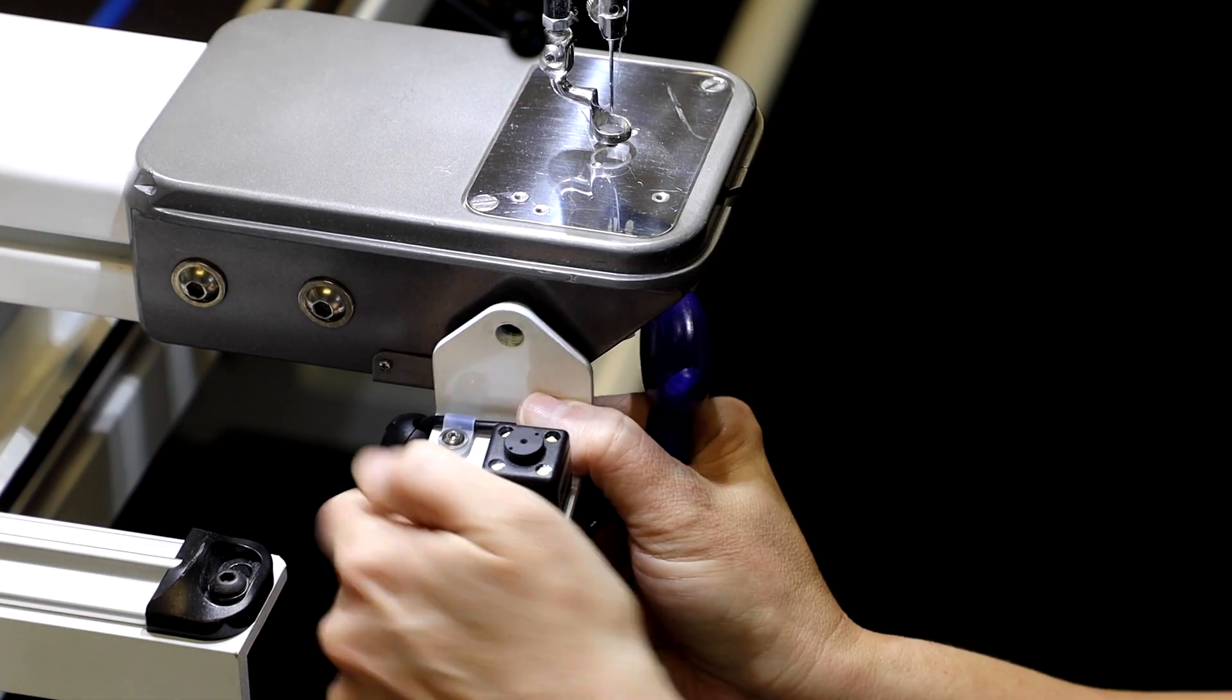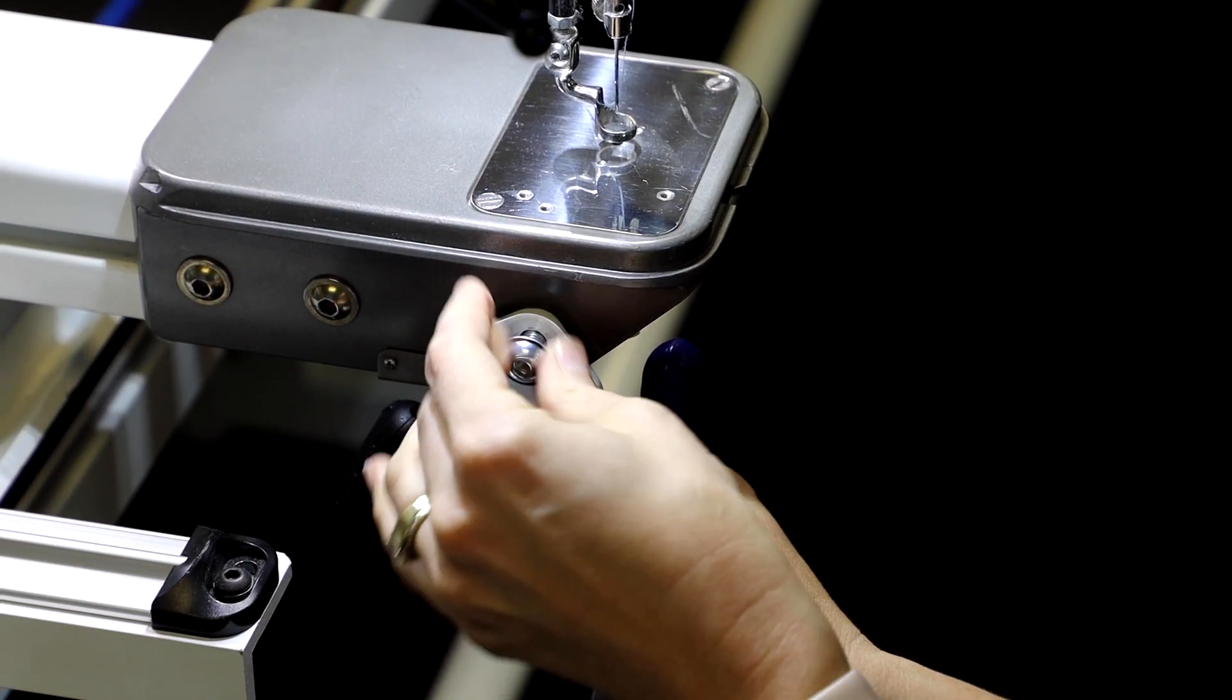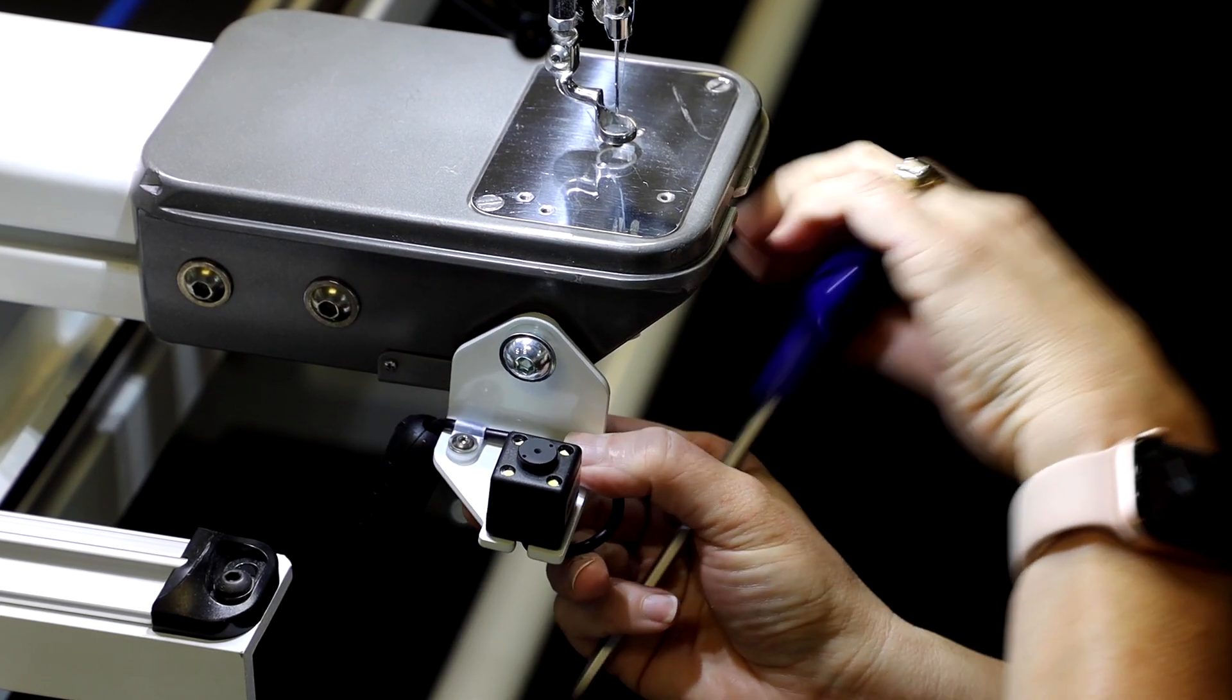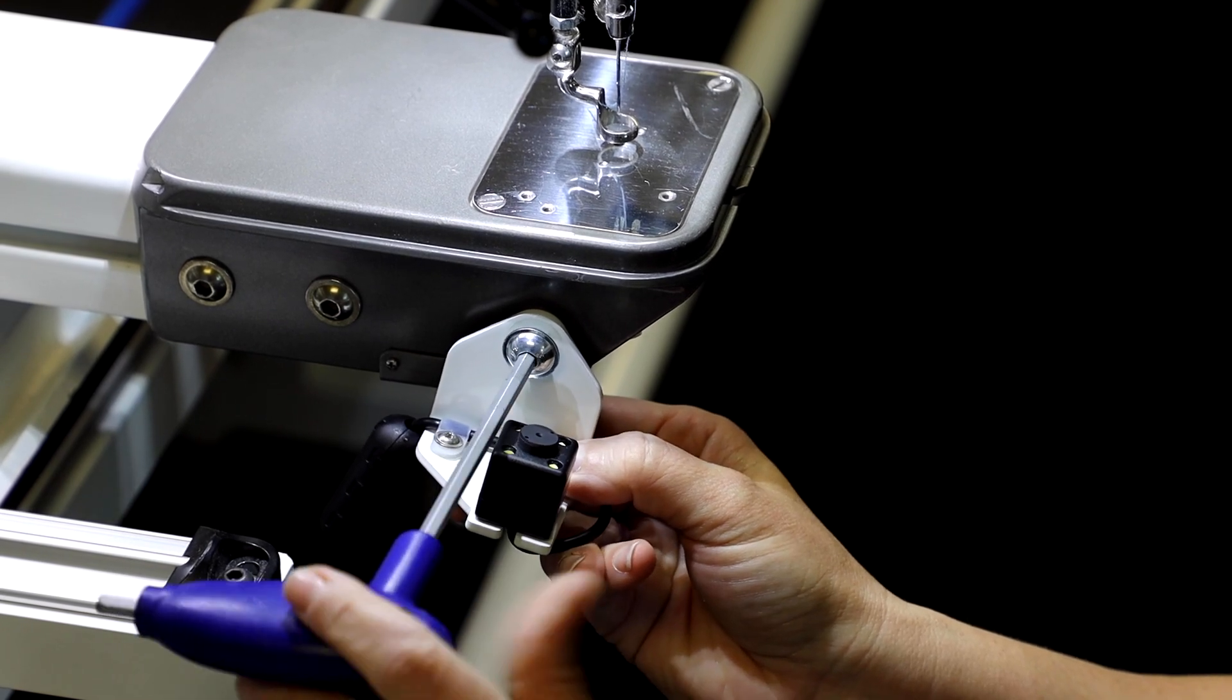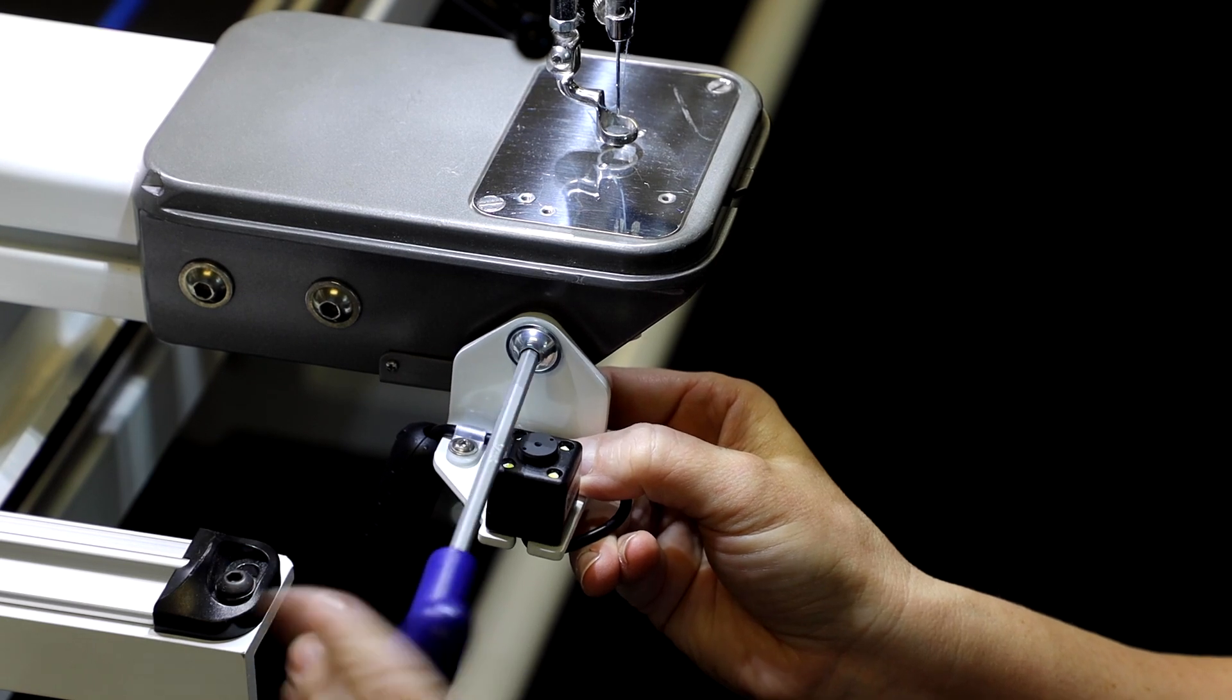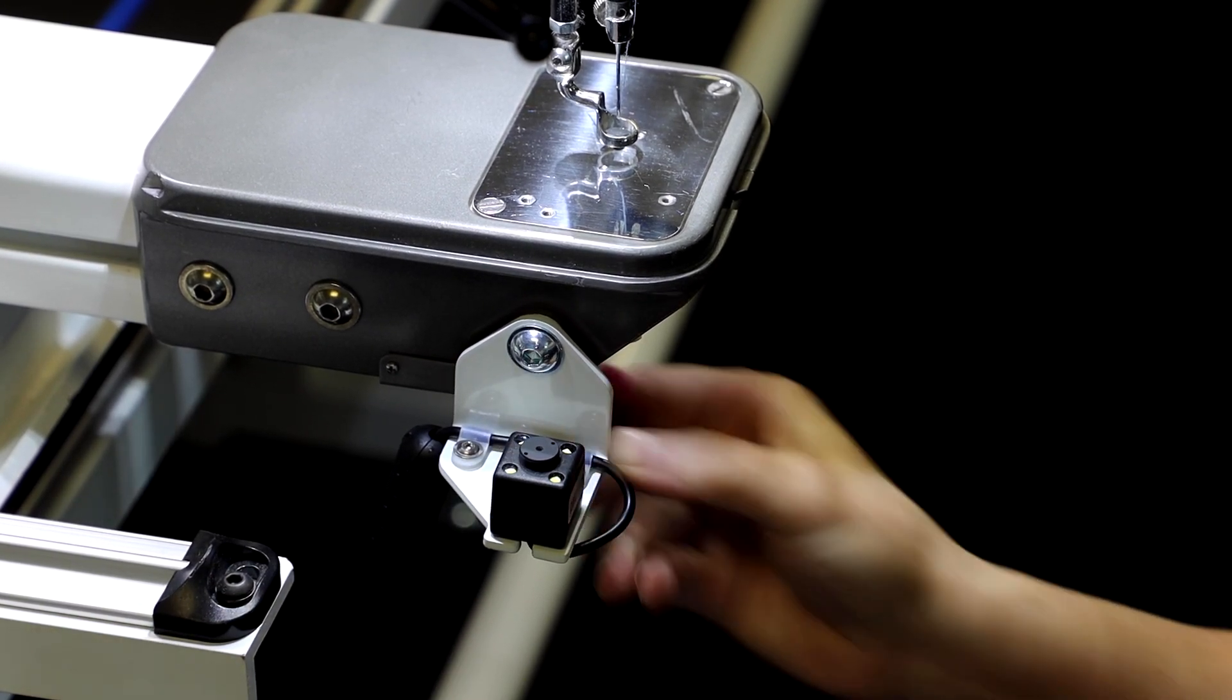Next you'll line up the bracket with that hole and just start screwing it in. You can grab your 5mm hex wrench at this point and go ahead and tighten that bolt up.